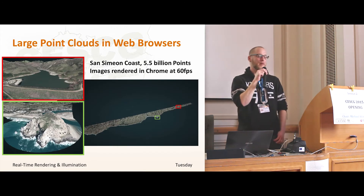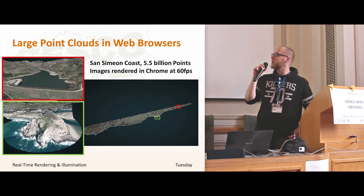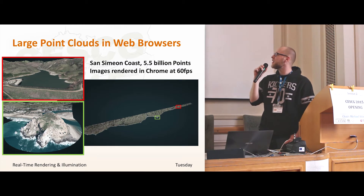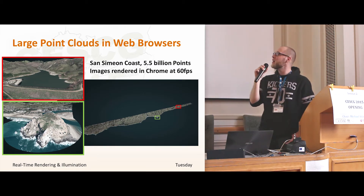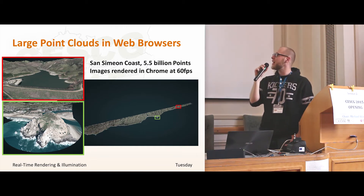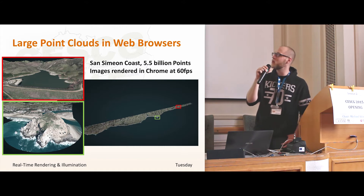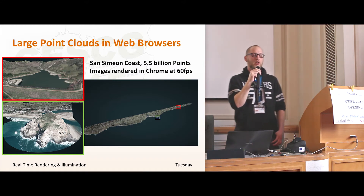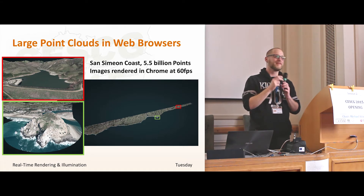Rendering large point clouds in web browsers — this one consists of 5 billion points and is hard to render even on desktop hardware. We have applied algorithms to make it possible to view these in browsers like Chrome, Firefox, and Opera, even on some mobile devices. If you are interested, come watch the presentation tomorrow morning. Thank you.